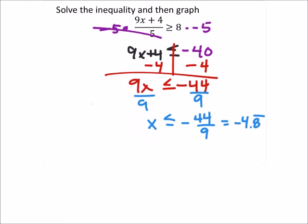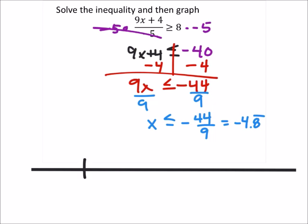How do we graph this? First we need a number line. That'll work. This is between negative 5 and negative 4. Negative 4.8 repeating would be about right here.